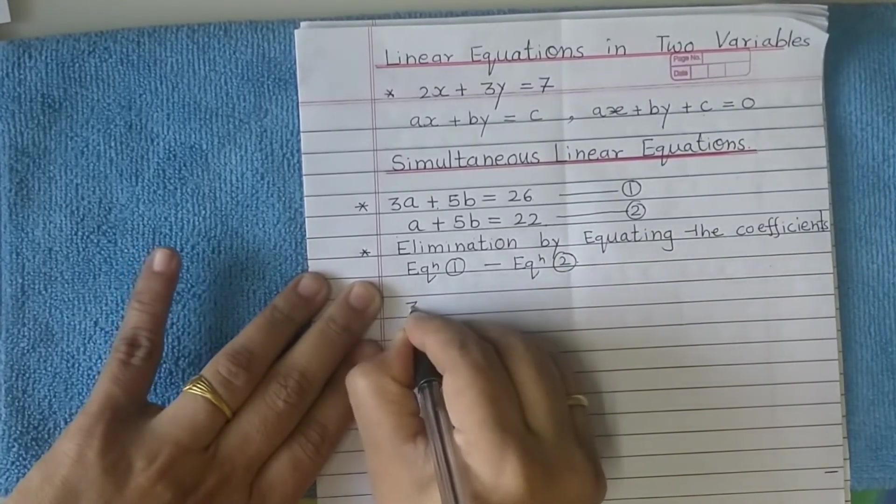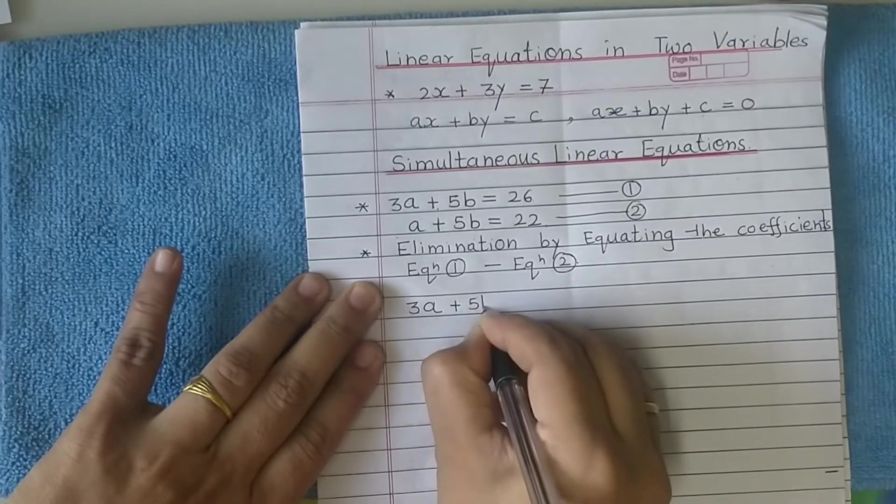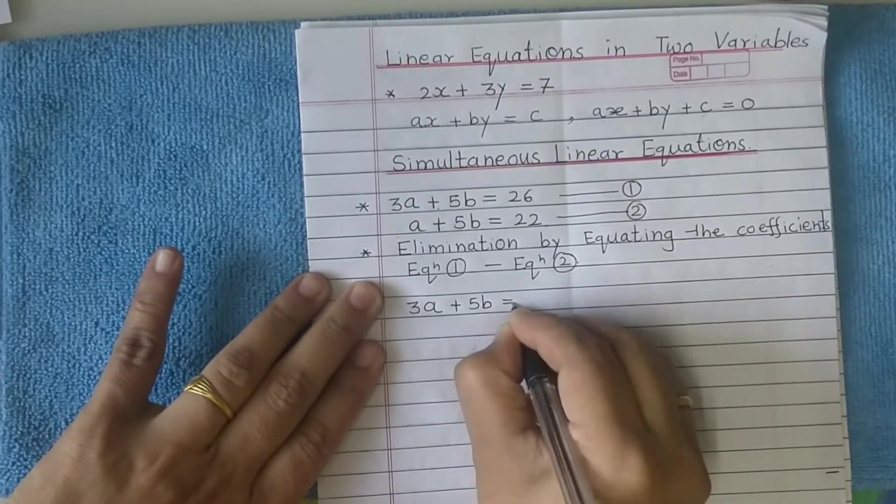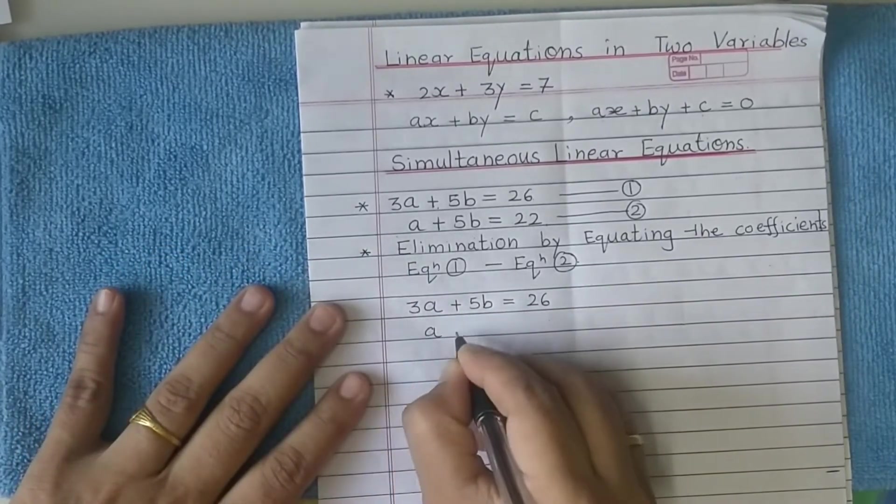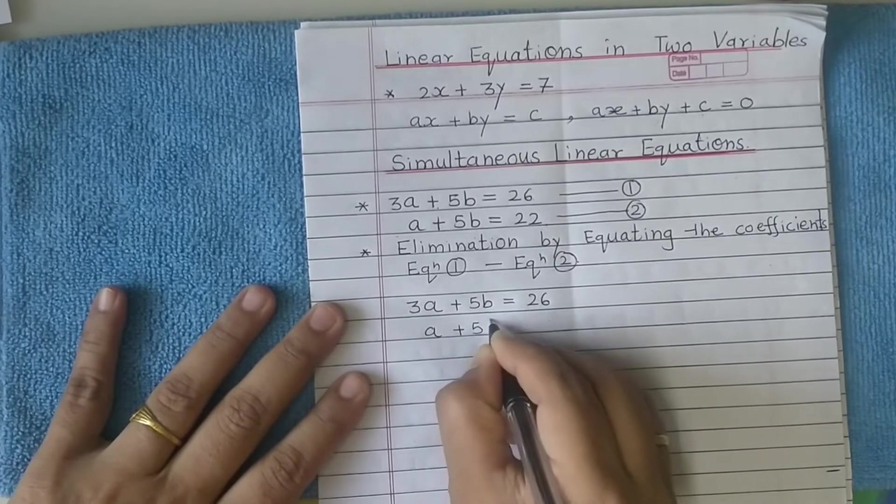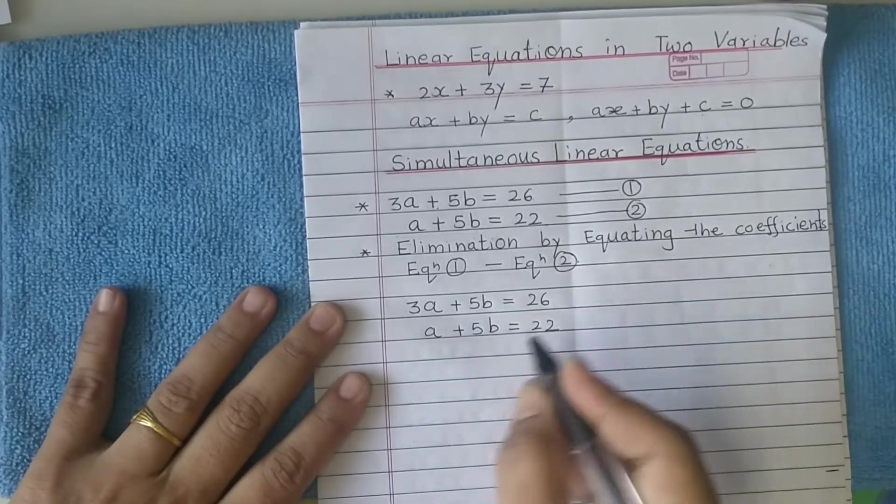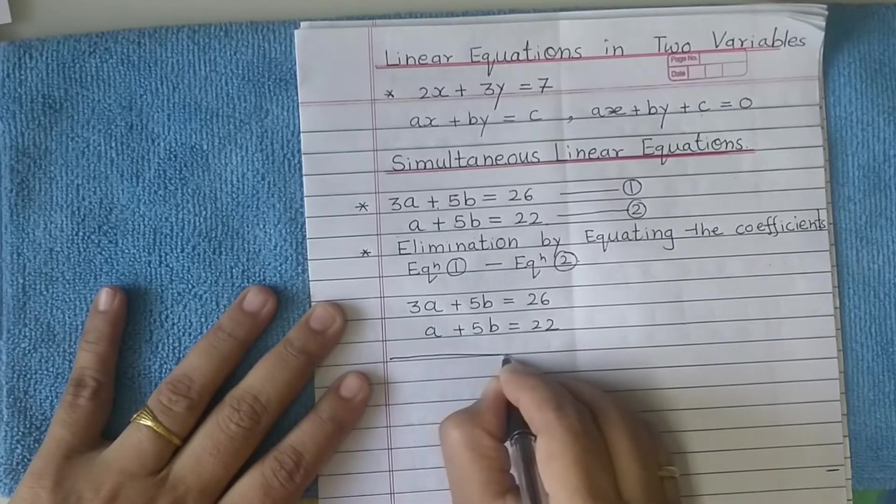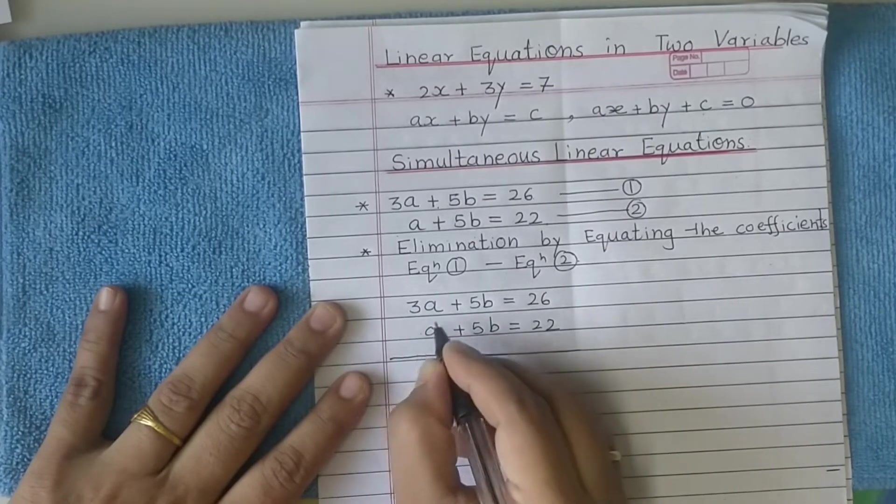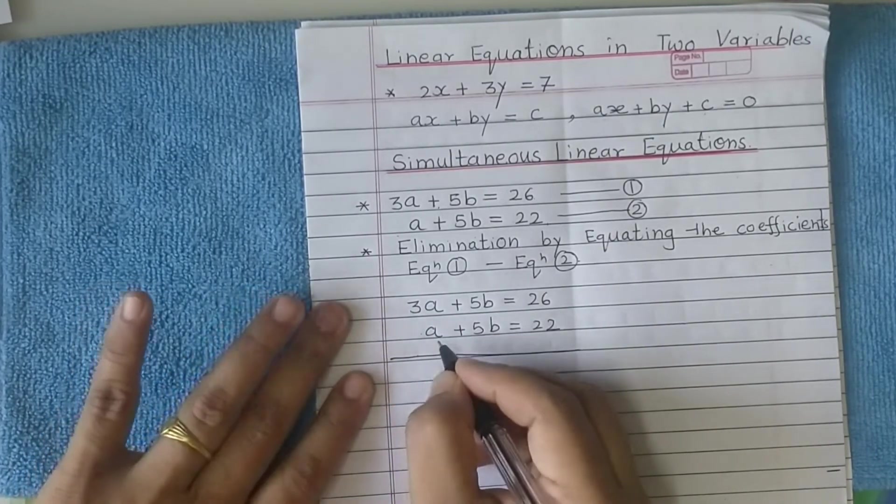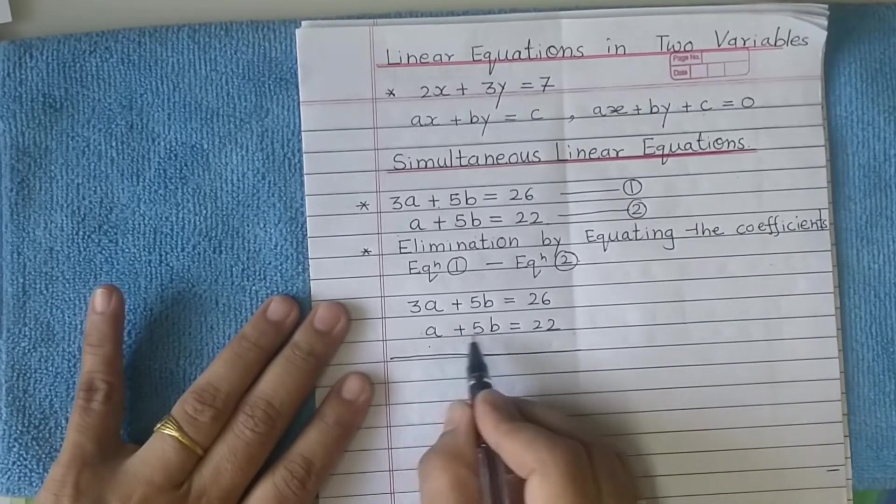Rewrite them: 3a plus 5b equals 26, a plus 5b equals 22. Now as we are subtracting the equation, the second is subtracted. We know how to subtract algebraic expressions - the second one which is to be subtracted, we change all the signs.